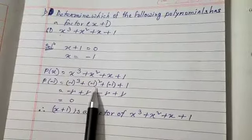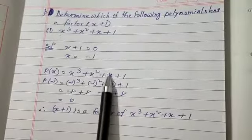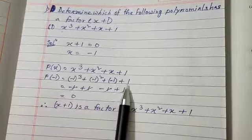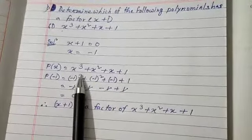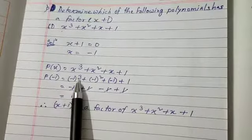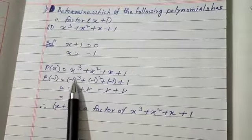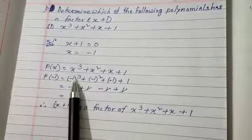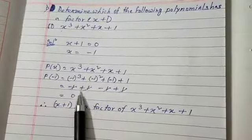Now calculating: (-1)³ means -1 multiplied three times, which equals -1. Then (-1)² means -1 multiplied two times, which equals +1.